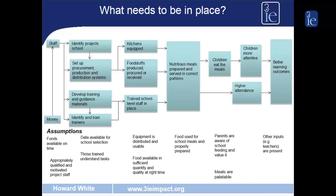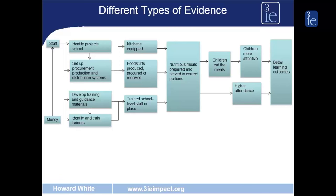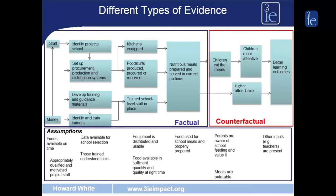What needs to be in place? These would be assumptions underlying the theory of change. First, parents need to be aware of the programme, including parents who don't have children in school, in order to send their children to benefit from the school meal. Secondly, you need appropriately qualified and motivated project staff. To test these assumptions, we need both factual and counterfactual evidence. Factual evidence describes what happens in programme areas. Counterfactual evidence captures what would have happened in the absence of the programme, requiring a rigorous impact evaluation design.